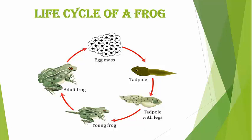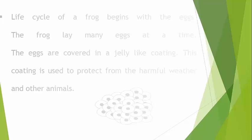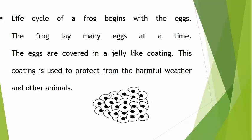The life cycle of a frog begins with the eggs. The frog lays many eggs at a time. The eggs are covered in a jelly-like coating, and this coating is used to protect them from harmful weather and other animals.